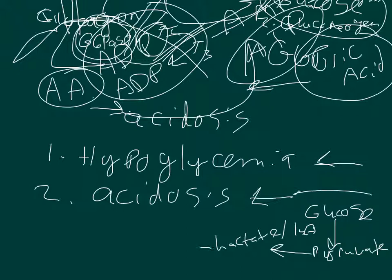That lactate gets sent to the liver, and the liver tries to convert it back into pyruvate and then through gluconeogenesis back into glucose. But in our case, we're stuck again. So we have a buildup of lactic acid in the blood, and we also have a buildup of uric acid.